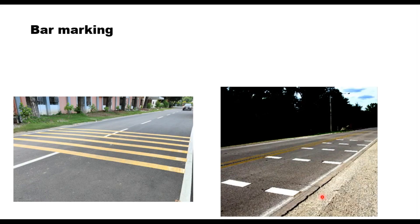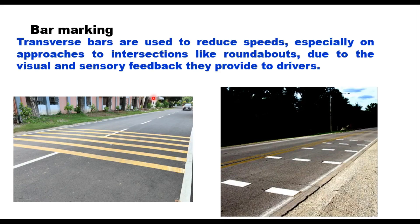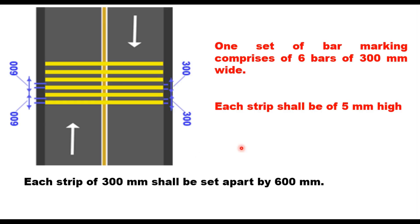The fourth type is bar marking. Transverse bars are used to reduce speeds especially on approaches to intersections like roundabouts, due to the visual and sensory feedback they provide to drivers. These are typically placed in the full width of the carriageway excluding paved shoulders, and can be painted lines, raised strips, or a combination of both — generally white or yellow in color. They are provided in sets; one set of bar marking comprises six bars of 300 mm wide with a spacing of 300 mm between the bars. Each strip is generally 5 mm high, and each strip of 300 mm shall be set apart by 600 mm.